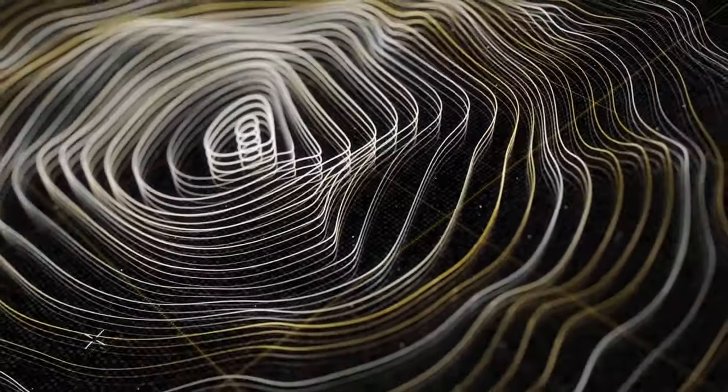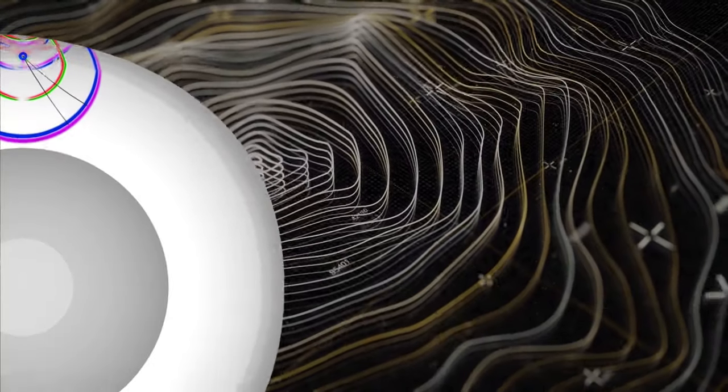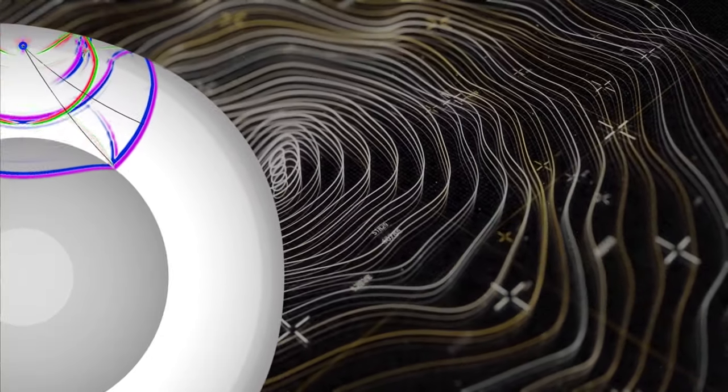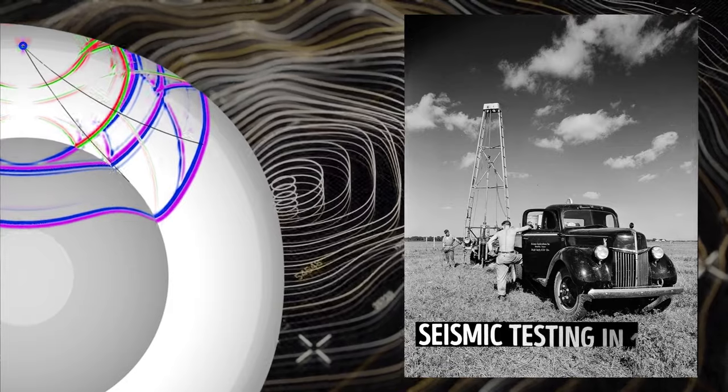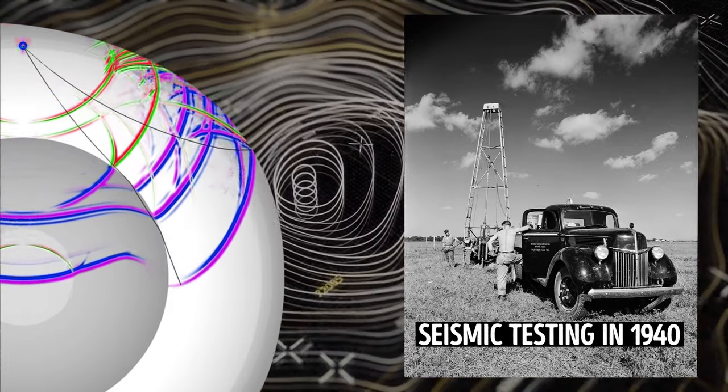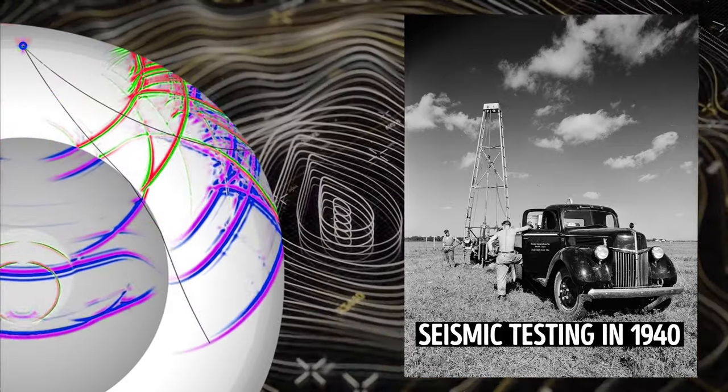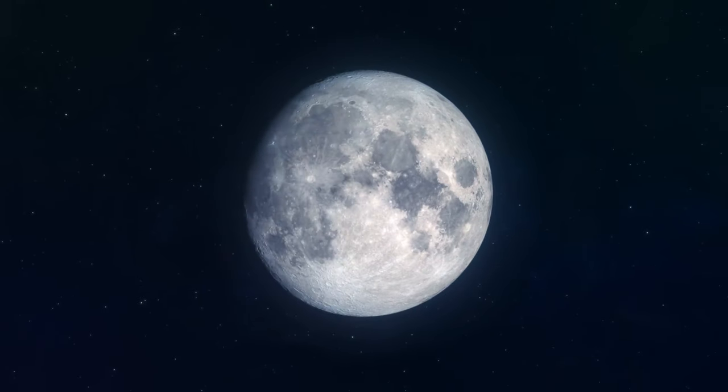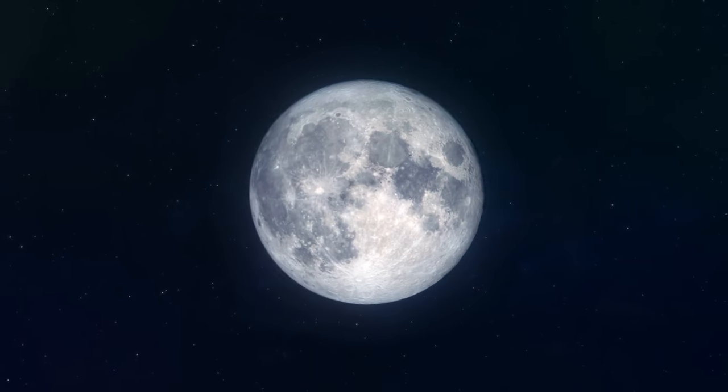Take earthquakes on our planet as an example. When an earthquake happens, it creates waves that travel through the ground. Scientists can detect and analyze these waves to learn more about Earth's interior. The same idea can apply to other objects in our solar system, or planets, or in this case, the moon.